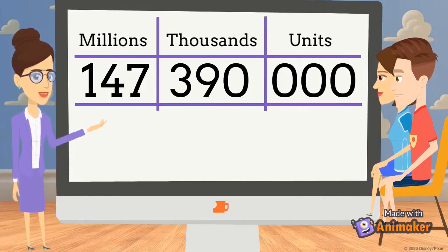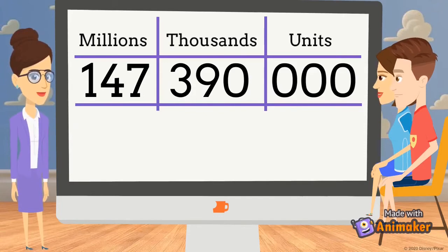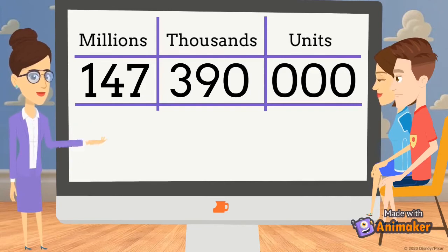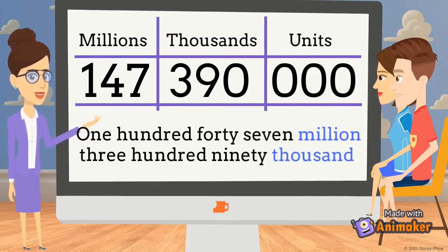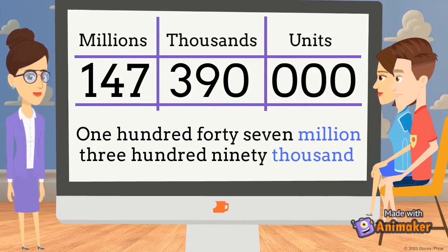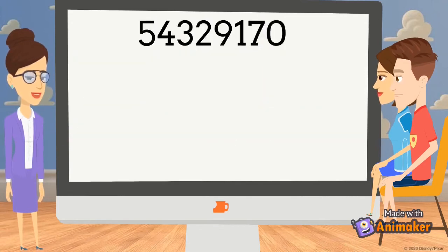Let's try to read this number. You know how to read a number with three digits. What is the three-digit number in the millions period? It is 147. What is the three-digit number in the thousands period? It's 390. The number in the units period is 0. So we can read this number as 147 million, 390 thousand. After the three-digit number, you have to read the name of the period. But in the units period, we don't mention it.